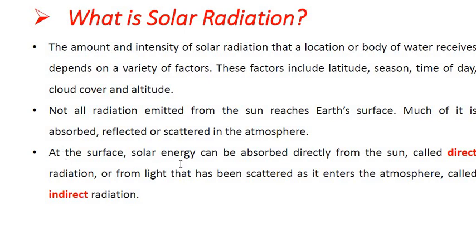At the surface, solar energy can be absorbed directly from the sun, called direct radiation, or from light that has been scattered as it enters the atmosphere, called indirect radiation. So the two main types of radiation are direct radiation and indirect radiation.